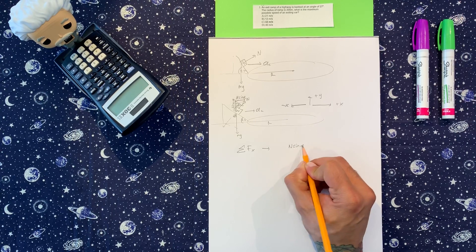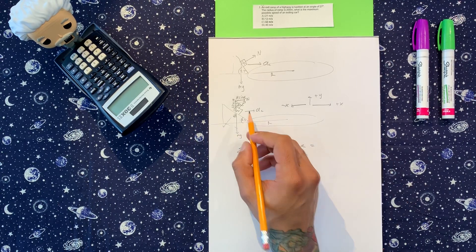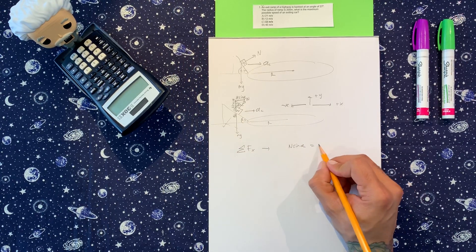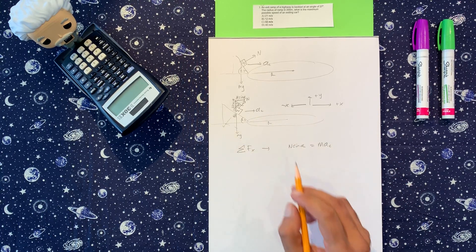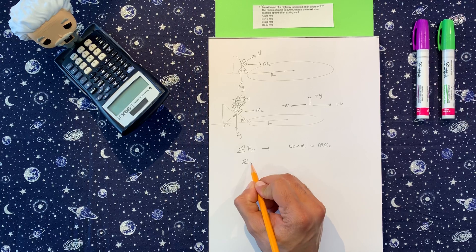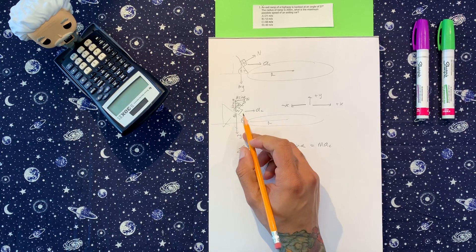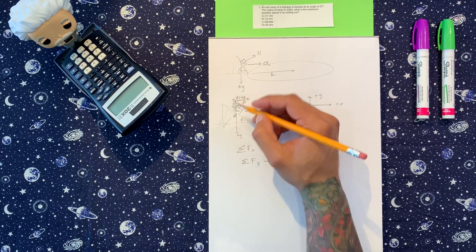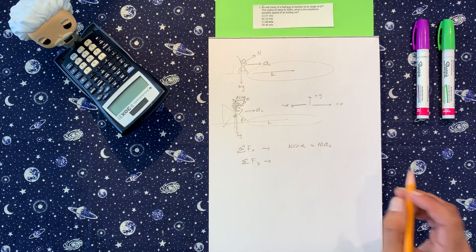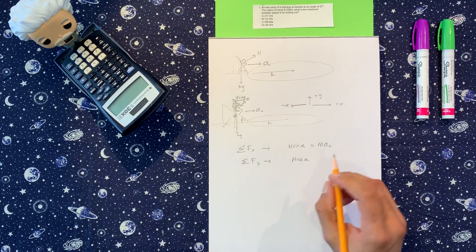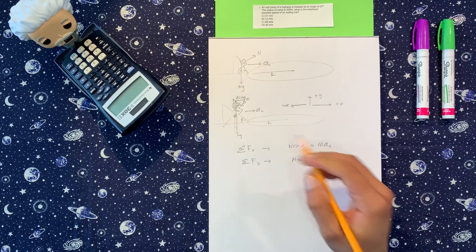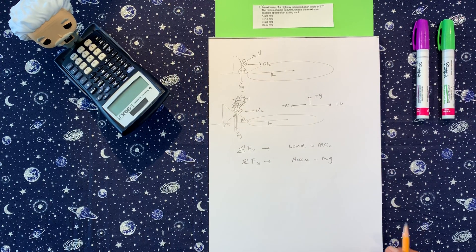Sum of forces for the y is going to be this one here and this one here, and they're both in opposite directions. So we're going to say that n cosine theta is up, and that's equal to MG, which is going down.